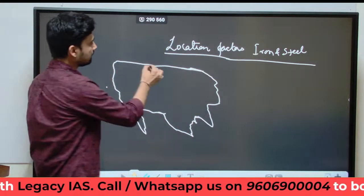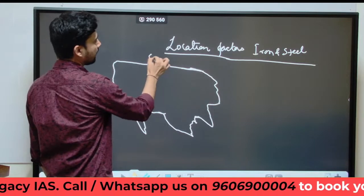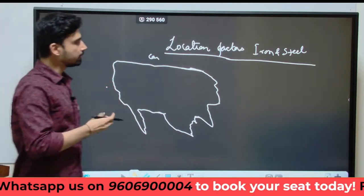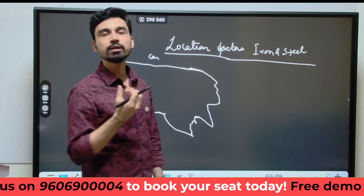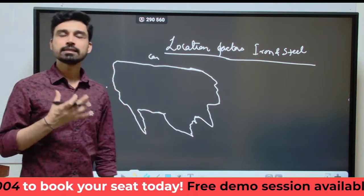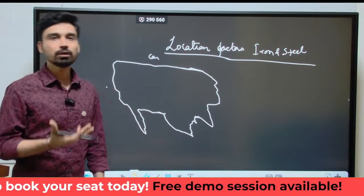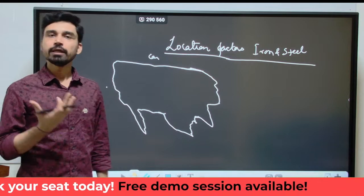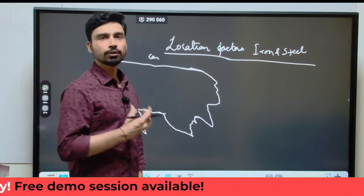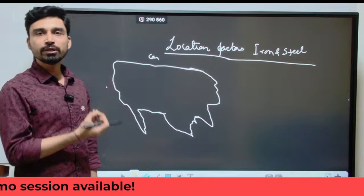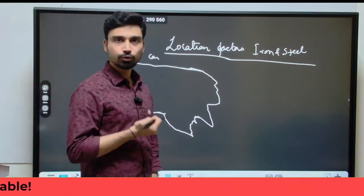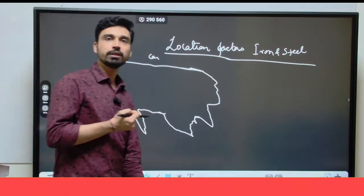On this side we have Canada, and this is the USA. Most importantly, to understand the industrial location, we know that industries depend on several location factors. As discussed in previous classes, the most important of these is raw material.